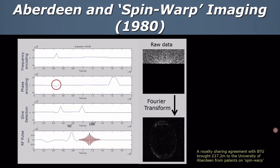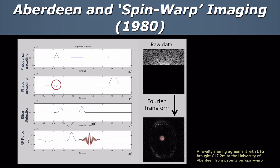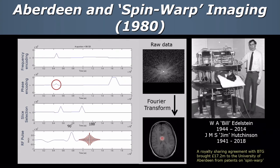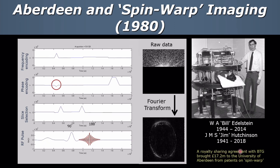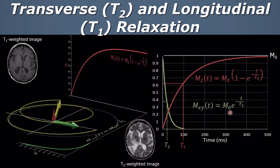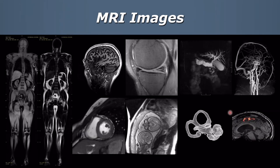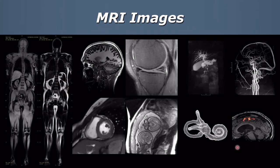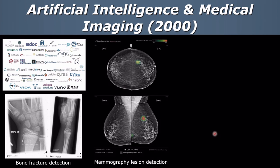This is a typical MRI imaging sequence where we acquire raw data, and doing the Fourier transformation you can see the image appearing. A lot of this work was originally done at the University of Aberdeen, who did quite well from the original patents for this type of imaging. The signal recovers and that's what gives rise to different contrasts. Some beautiful MRI images — we can go from whole body right down to looking at the semicircular canals.